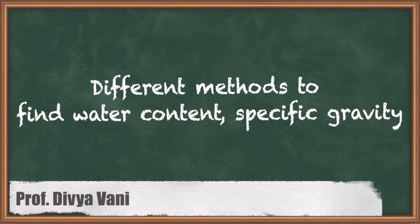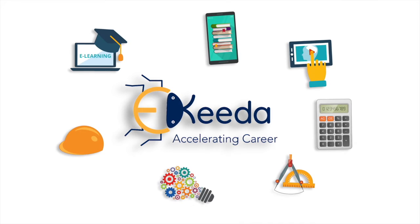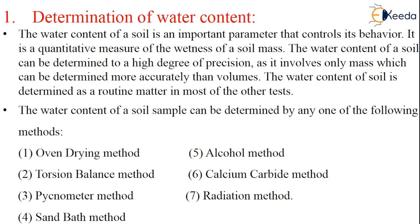Coming to the next topic, it is dealing with the different methods to find the water content and specific gravity. Water content of the soil is an important parameter which controls its behavior. It is a quantitative measure of the wetness of soil. The water content of soil can be determined to a high degree of precision and it involves only mass, which can be determined more accurately than volumes.